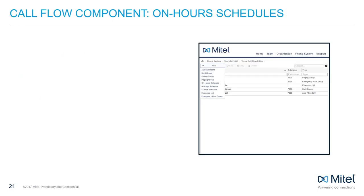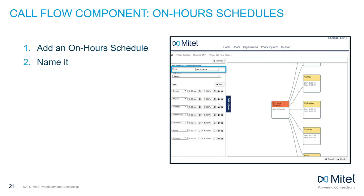On-hour schedules cover the hours that call flow is open, traditionally with live answering being available. If your business hours are 9 a.m. to 5 p.m. Monday through Friday, select Add and then On-Hours from the Add drop-down menu. You may need to create multiple on-hour schedules, so be sure you can distinguish between them when assigning them in your call flow.